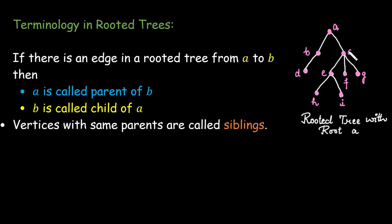It is important to note that in a rooted tree every vertex except the root has one parent. There can never be more than one parent because that would introduce a cycle which is not allowed in a tree.